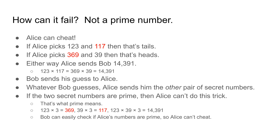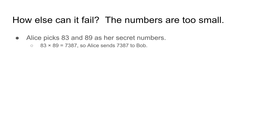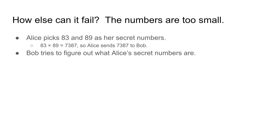Why prime numbers? That's the only way to make sure Alice doesn't cheat. If the secret numbers aren't prime, there can be more than one pair of secret numbers that multiply to the same product. Let's take another look at this example — once again Alice sends seven thousand three hundred eighty seven to Bob.